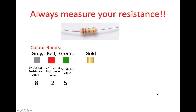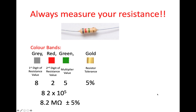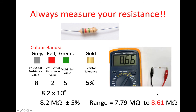Green is the multiplying value, and green is 5. Gold again is plus or minus 5%. So that would give us 82 multiplied by 10 to the power of 5, plus or minus 5% — that's 8.2 megaohms, plus or minus 5%. So if we were to use that 5% for the range, we'd expect a resistance value between 7.79 megaohms and 8.61 megaohms.